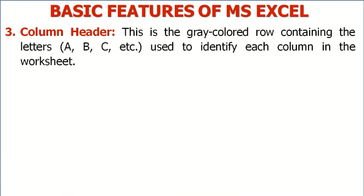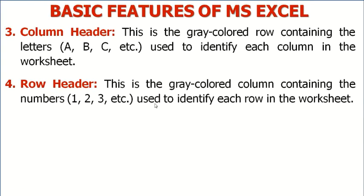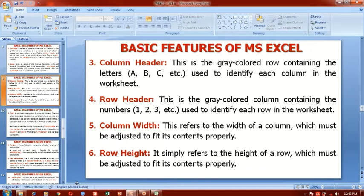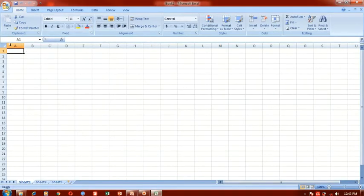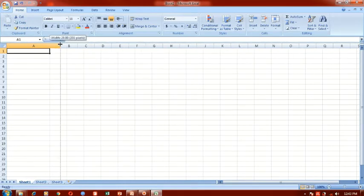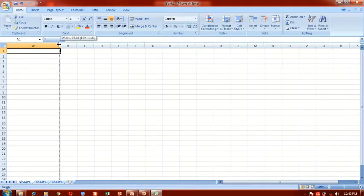The column header is the gray colored row containing the letters A, B, C used to identify each column in the worksheet. The row header is the gray colored column containing the numbers 1, 2, 3 used to identify each row in the worksheet. Column width refers to the width of a column which must be adjusted to fit its contents properly. The width of the column from this point to this point is the width of column A. You can adjust this column — click and hold down and drag to increase or enlarge the width, or drag to the left to reduce it.